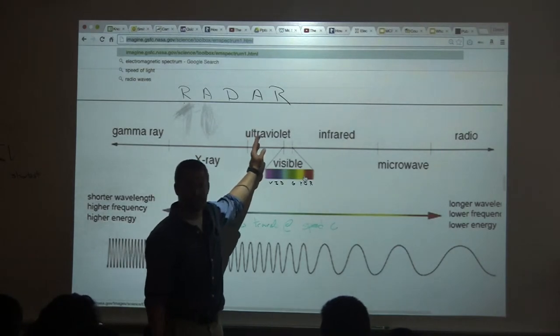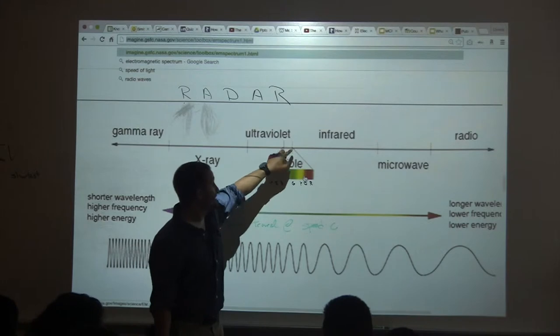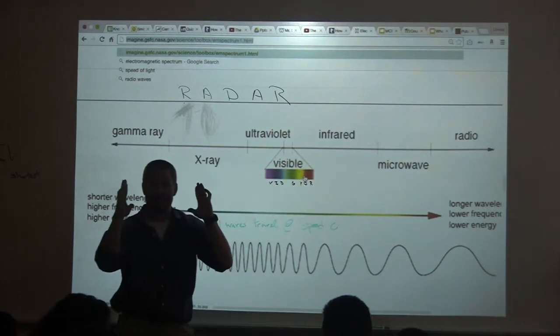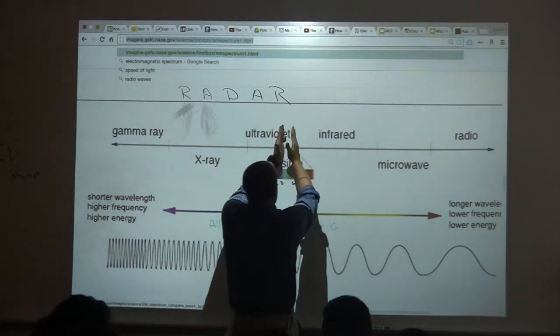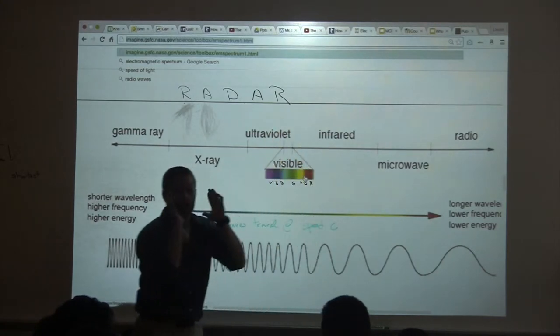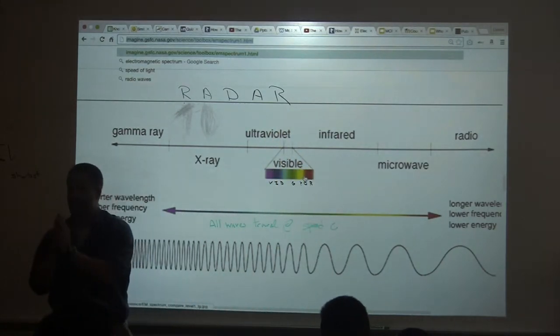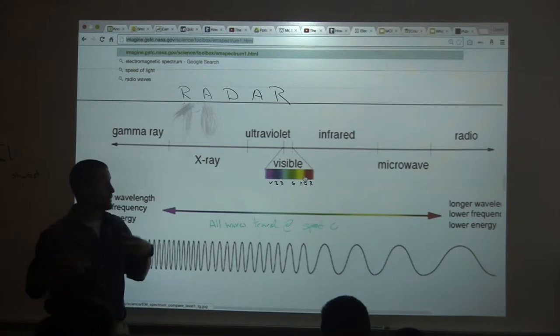Ultraviolet. The sun. It can hurt our skin, right? Give us cancer. This is the spectrum that we can only perceive as humans. This little blip right here. Everybody with me? That's all we can actually observe as humans with our eyes naturally.